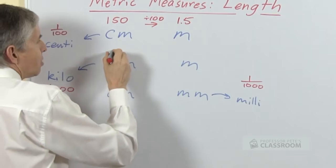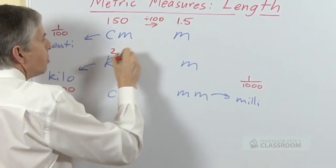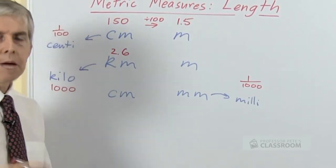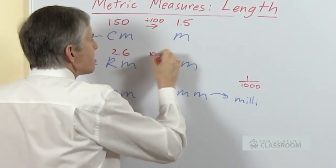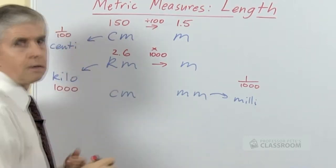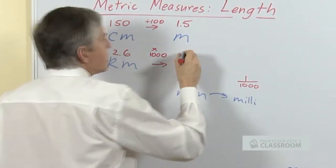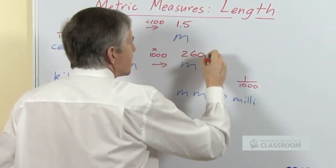Let me make up a couple of questions here. Say we had 2.6 kilometers, how many meters would that be? The conversion factor this time is 1,000 times. 2.6 times 1,000 will be 2,600.